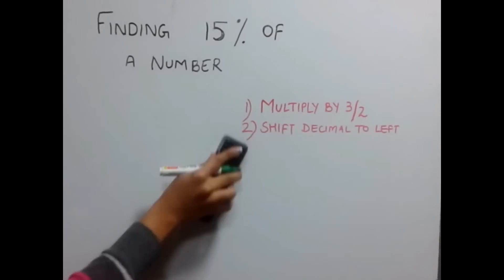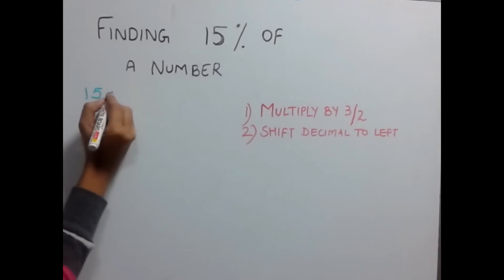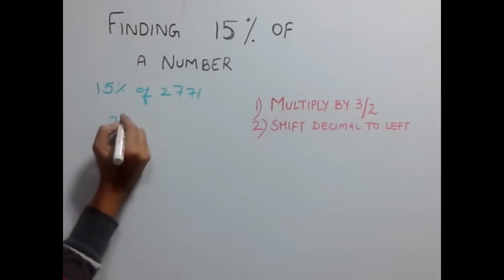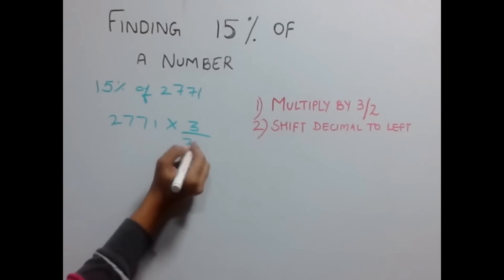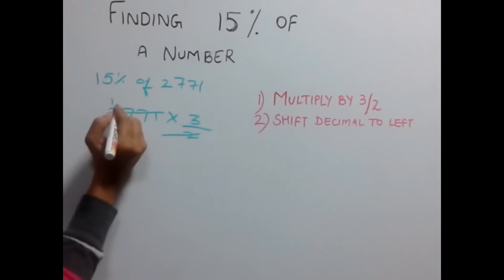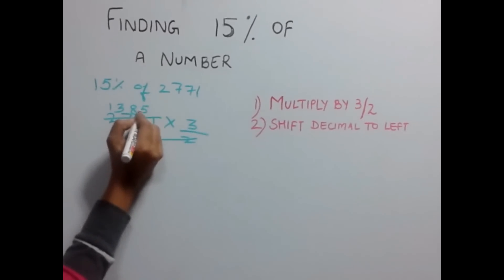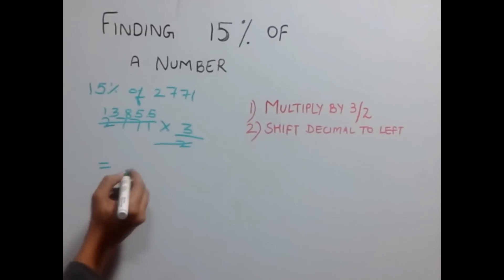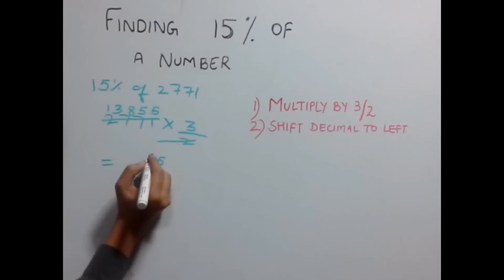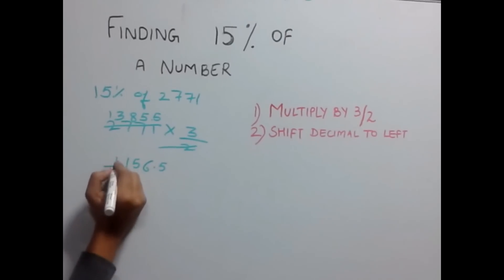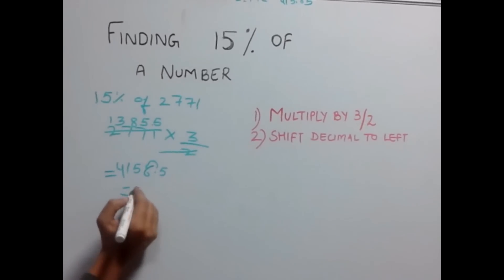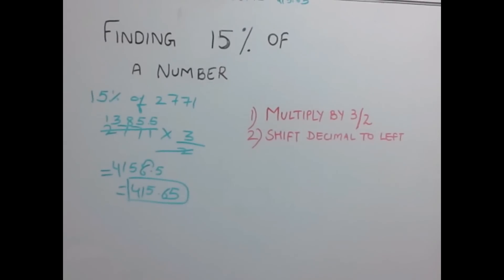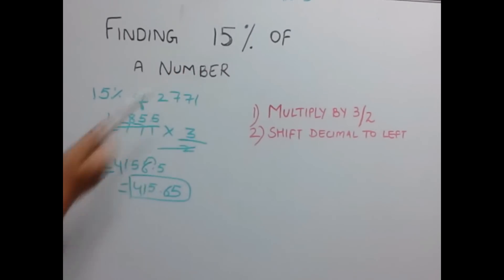Let's quickly look at another example. Let's find out 15% of 2771. So multiply this number by 3 by 2, which gives 1385.5. Multiplying this with 3 gives us 4156.5 as the answer. Now shift one decimal over here, which gives 415.65 as the answer. And this way you can easily find out 15% of any number.